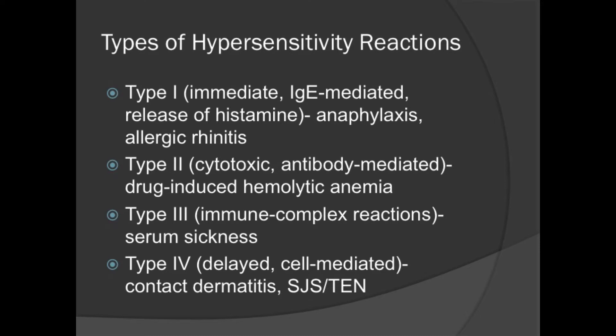Type 4 is usually called delayed — it is cell-mediated. On one end you have contact dermatitis, up to Stevens-Johnson syndrome and toxic epidermal necrolysis. Types 2, 3, and 4 are all generally delayed reactions, but type 4 is the classic delayed hypersensitivity.